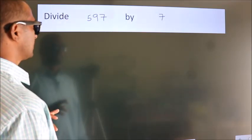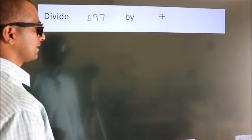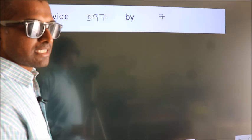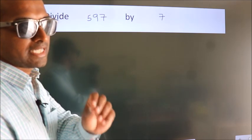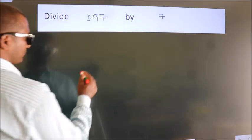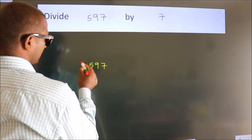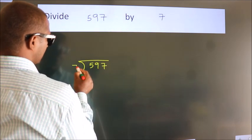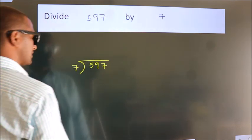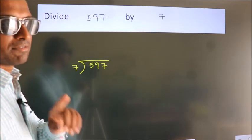Divide 597 by 7. To do this division we should frame it in this way: 597 here, 7 here. This is your step 1.